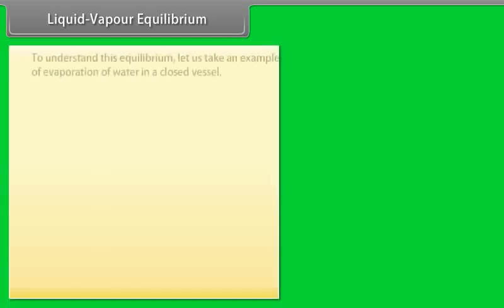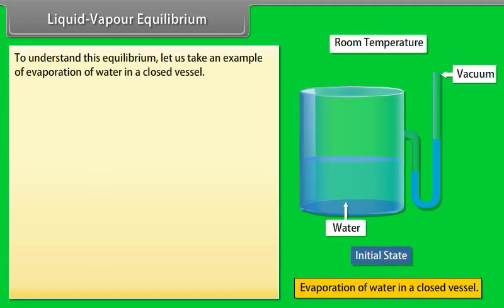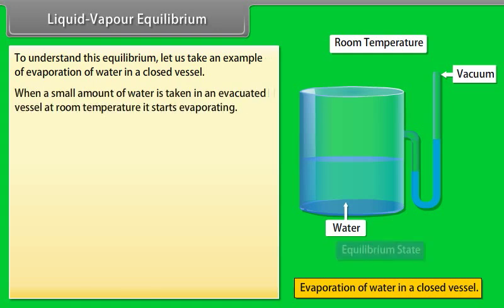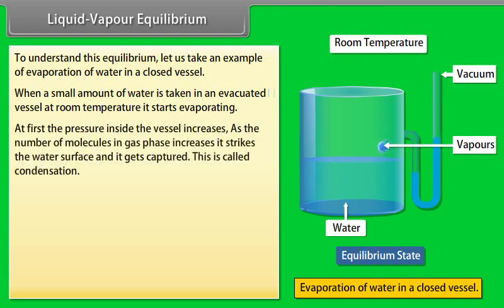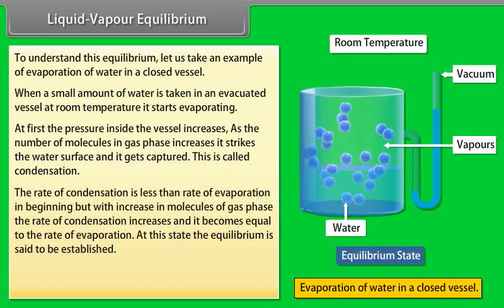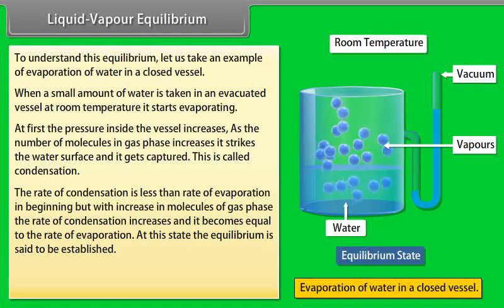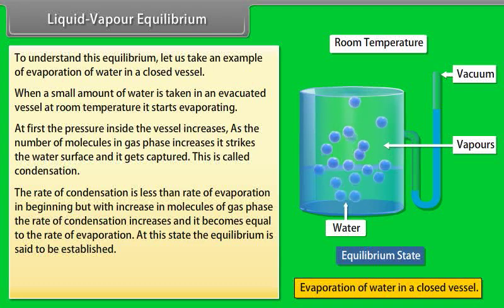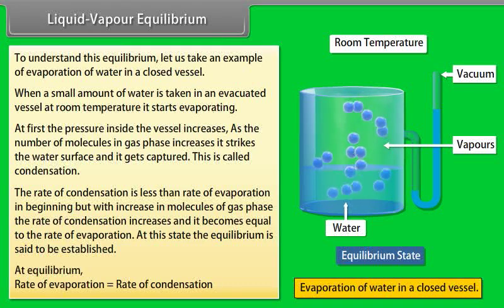Liquid-Vapour Equilibrium: Consider evaporation of water in a closed vessel. When a small amount of water is taken in an evacuated vessel at room temperature, it starts evaporating and the pressure inside increases. As gas-phase molecules increase, they strike the water surface and get captured — this is condensation. Initially, the rate of condensation is less than the rate of evaporation, but as gas-phase molecules increase, the rate of condensation increases until it equals the rate of evaporation. At this state, equilibrium is established.